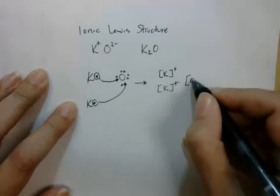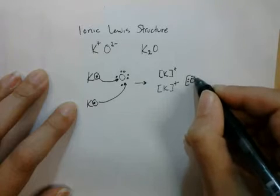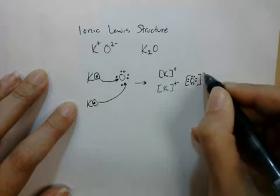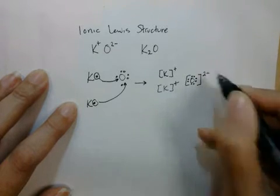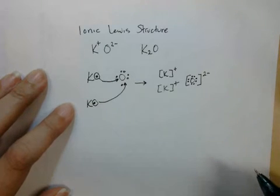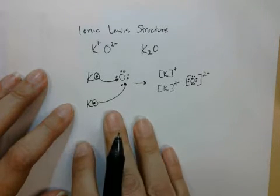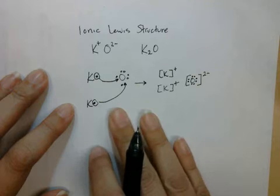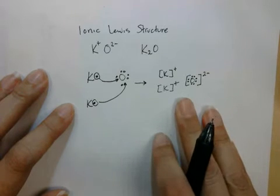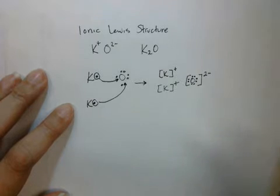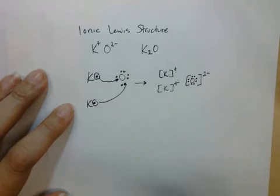And of course, we also have an oxide ion, which would have all eight of its valence electrons shown, and out here we would have the two-minus charge. So we start with the elements, show how their electrons move, and then our final product has ions with charges. It is held together by ionic bonding — plus/minus charge attraction.